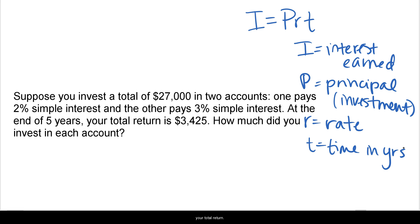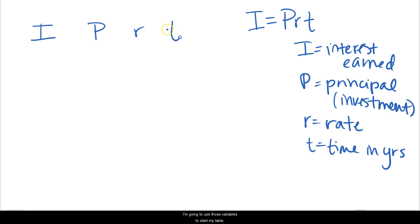So at the end of five years, your total return or your total interest earned is $3,425. How much did you invest in each account? I like to set up a table to organize my information. I'm going to use those variables to start my table.